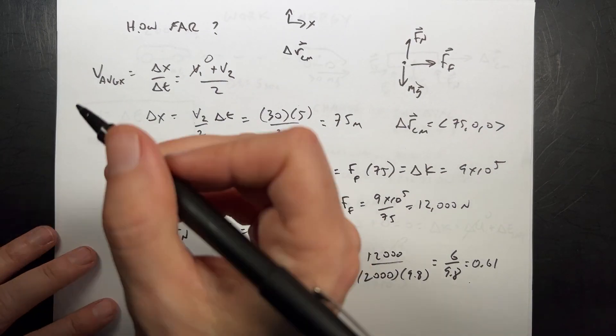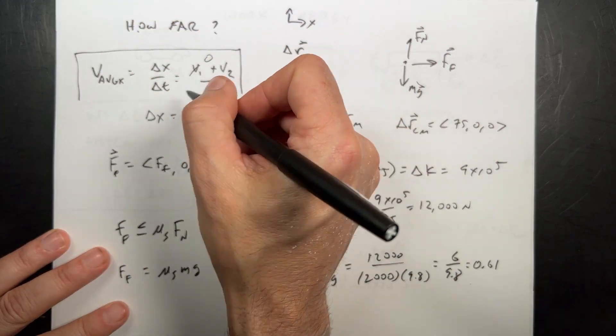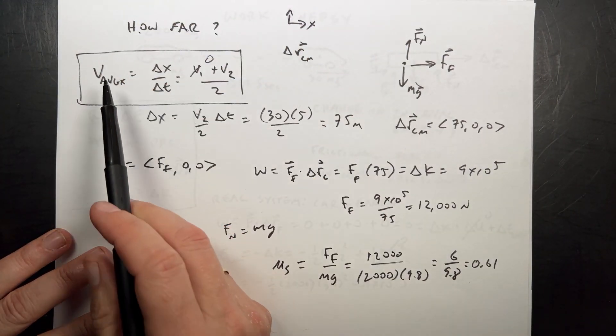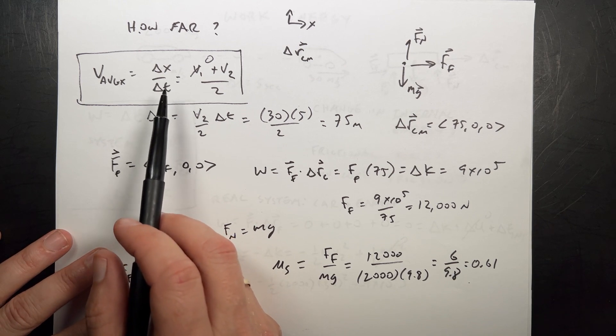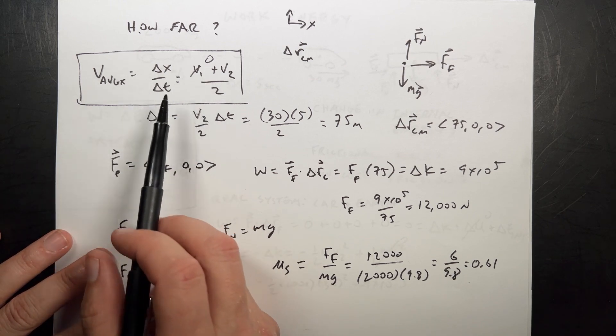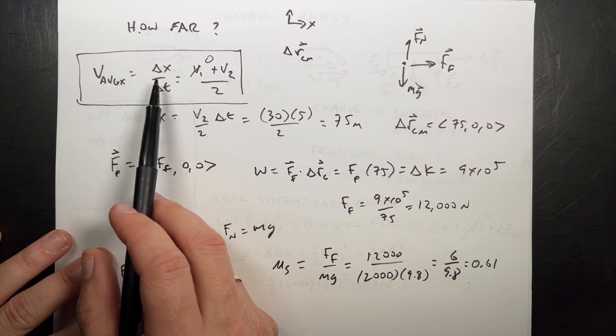I think the one key trick that people are going to get stuck on is this right here. If we know the distance, or we don't know the distance, but we know the time, we use this definition of average velocity. And it's much better to write this as a scalar component form of that,